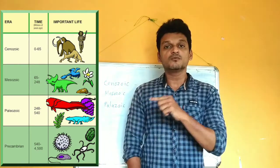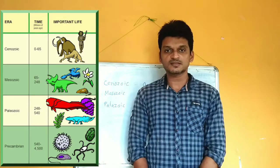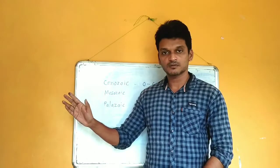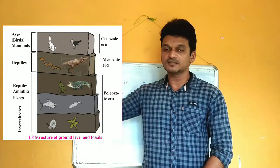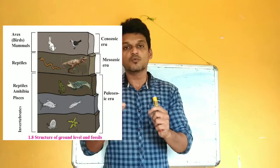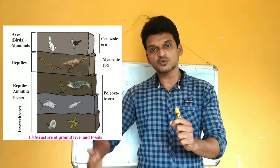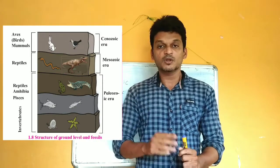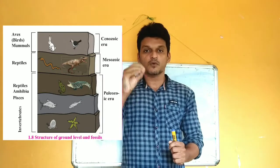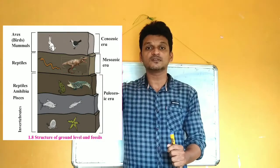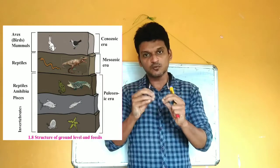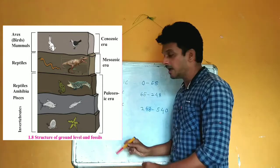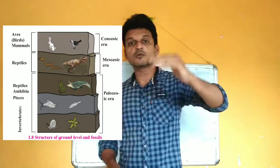Let us come back to the original image, which shows which animals were present in each era. Once we get a fossil from different layers of Earth, its age is determined using carbon dating. Once we know the age of that fossil — how many years ago it was living — those fossils or organisms are placed in a particular era.